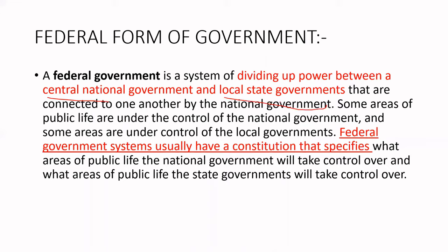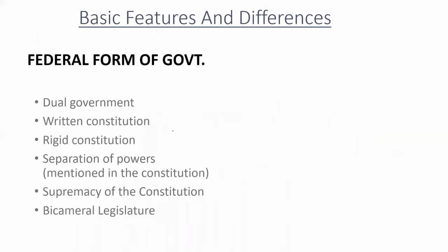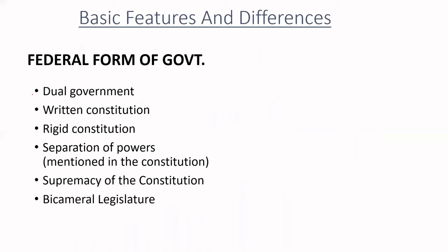In the federal form of government, the division of power is specifically mentioned in the constitution of the particular country. Moving further to the basic features and differences — the federal form of government is a dual form of government. Its constitution is a written constitution, and this written constitution is a rigid constitution, meaning it is difficult to amend. Separation of power is a very important feature of federal form of government, and it is mentioned in the constitution.